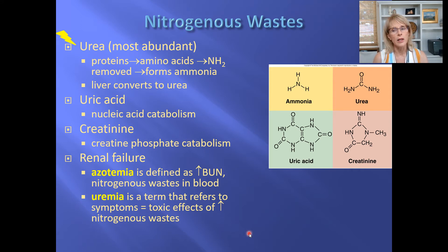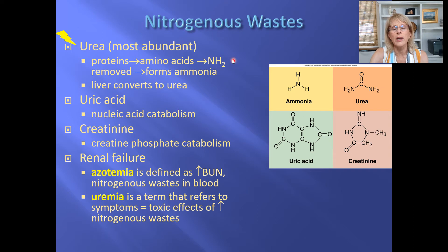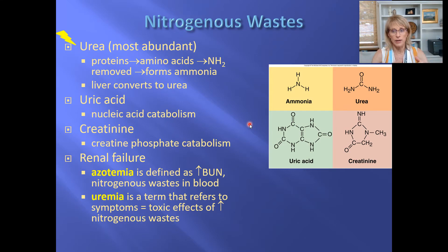If you had very high levels of urea, creatinine, and ammonia in your blood, you would feel nauseated, weak, and have muscle and joint aches. Now, in the human body the liver turns ammonia into urea. But when urine is outside the body or in the urinary bladder and gets exposed to bacteria, bacteria will take urea and use it as an energy source, turning it back into ammonia.